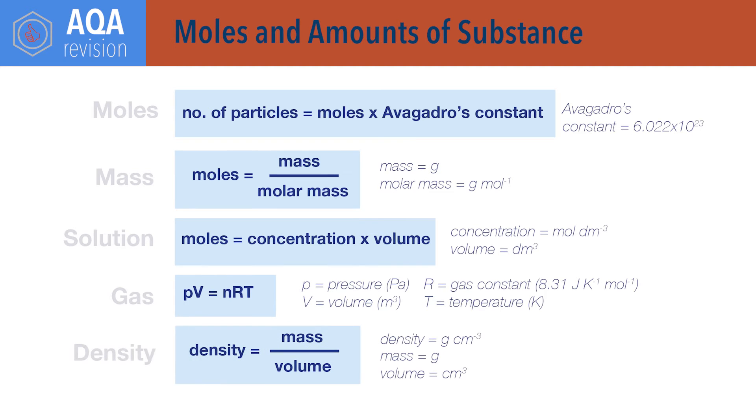Density equals mass divided by volume, where the units for density are based on the units of mass and volume. For example, grams per centimetre cubed.